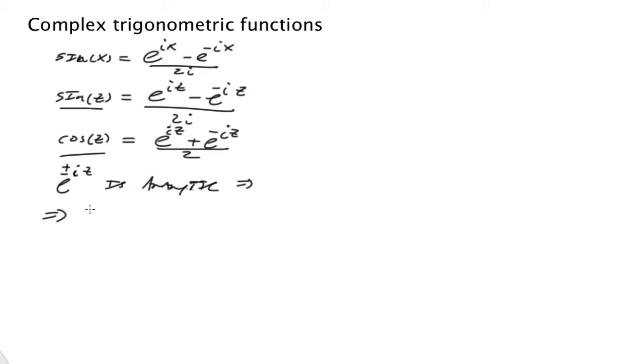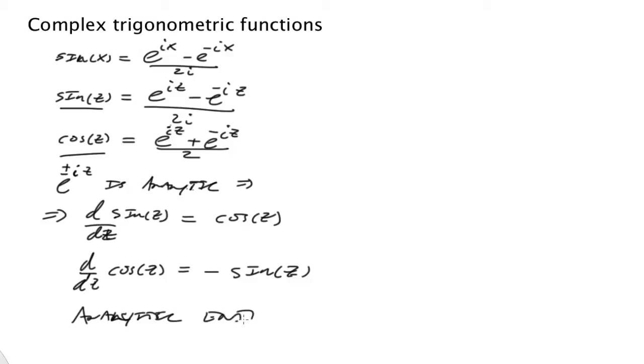You can find their derivatives fairly straightforwardly. So d/dz of sine z is cosine z, and d/dz of cosine z equals negative sine z. This works for the complex variable. So these functions are analytic, entire. It means these derivatives exist everywhere on the entire complex plane.